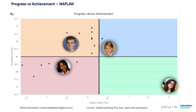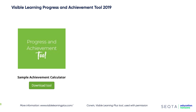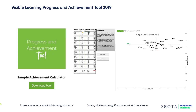If you're not a Sector school, we recommend you go to the Visible Learning Plus website shown at the bottom of the screen to download the sample achievement calculator. You can drop in your NAPLAN literacy data — for example writing from 2015 to 2017 or 2017 to 2019. You need two points of data and it will then auto-calculate the average effect size and plot students on the progress versus achievement graph.